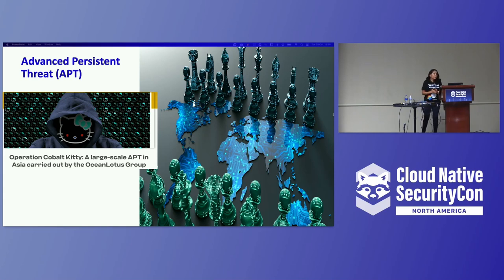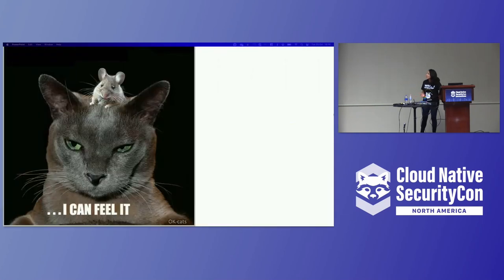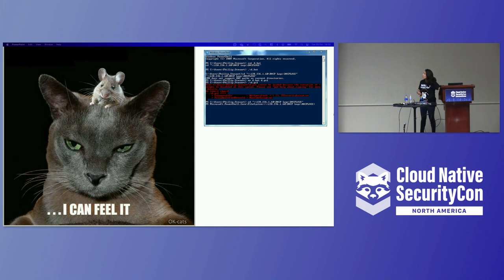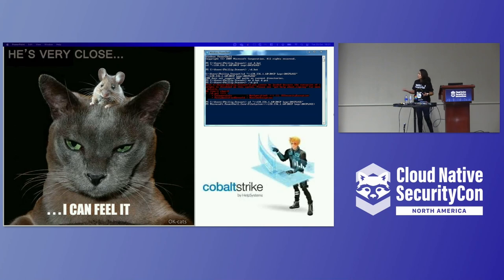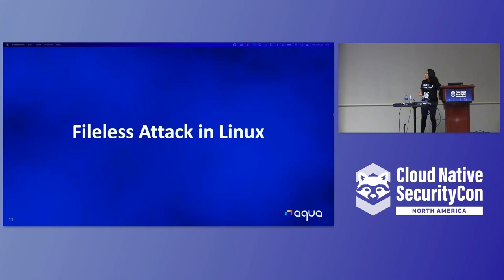A famous case is Cobalt Kitty, where this fileless attack persisted for about one year inside the system before the security team detected it. They used legitimate programs like PowerShell, and in this case it was Cobalt Strike. This is more the literature you will hear about fileless attacks in Windows.